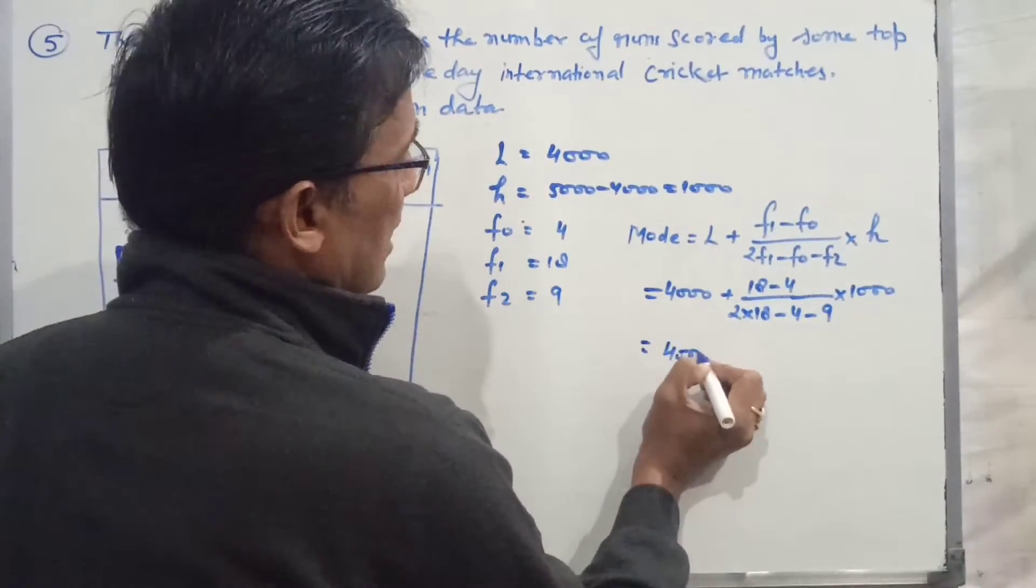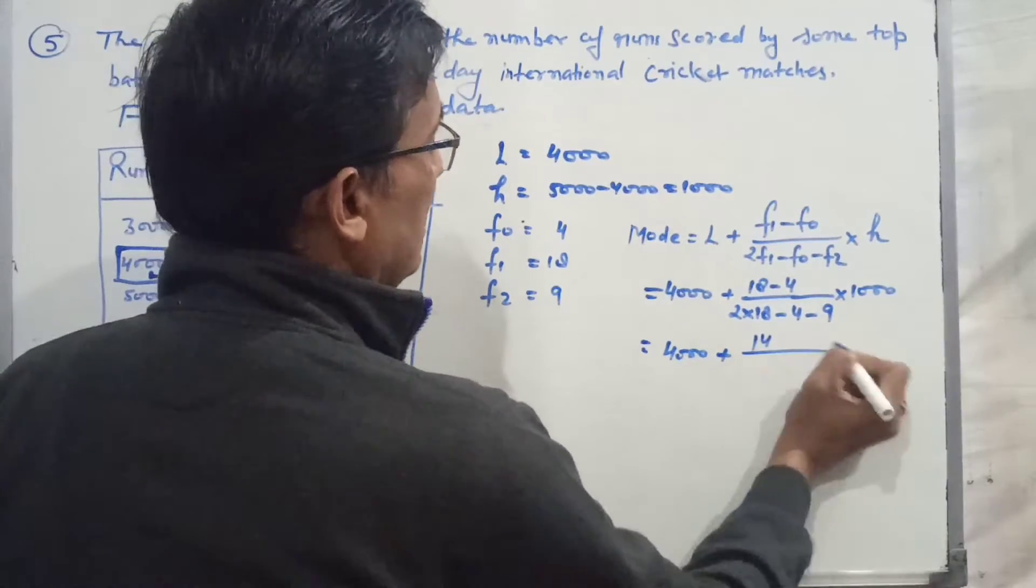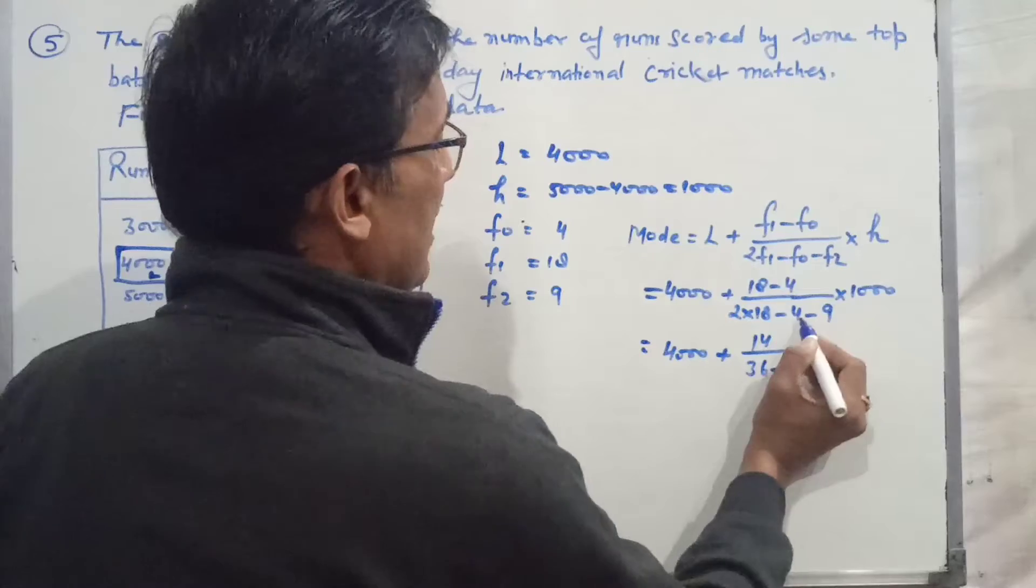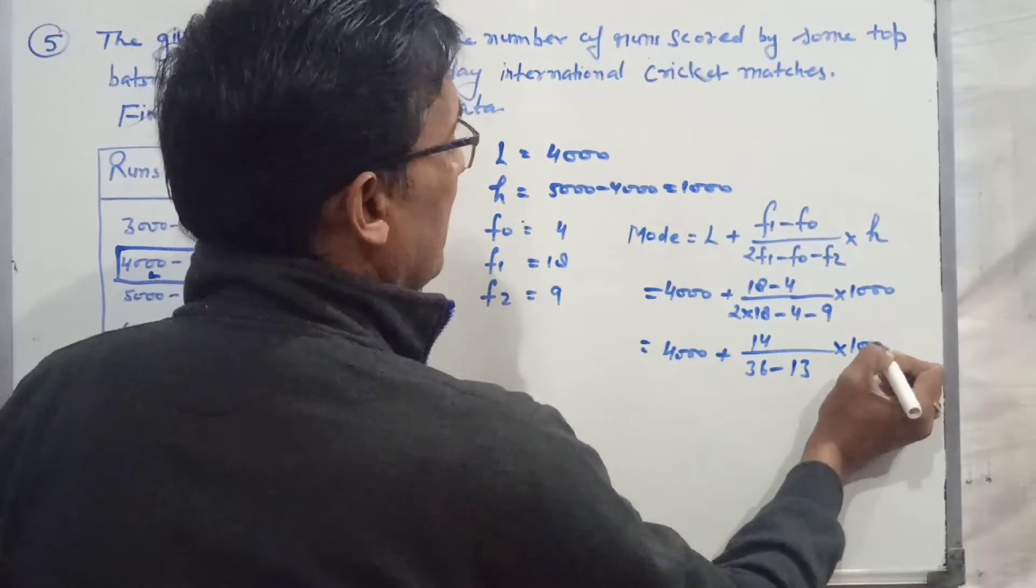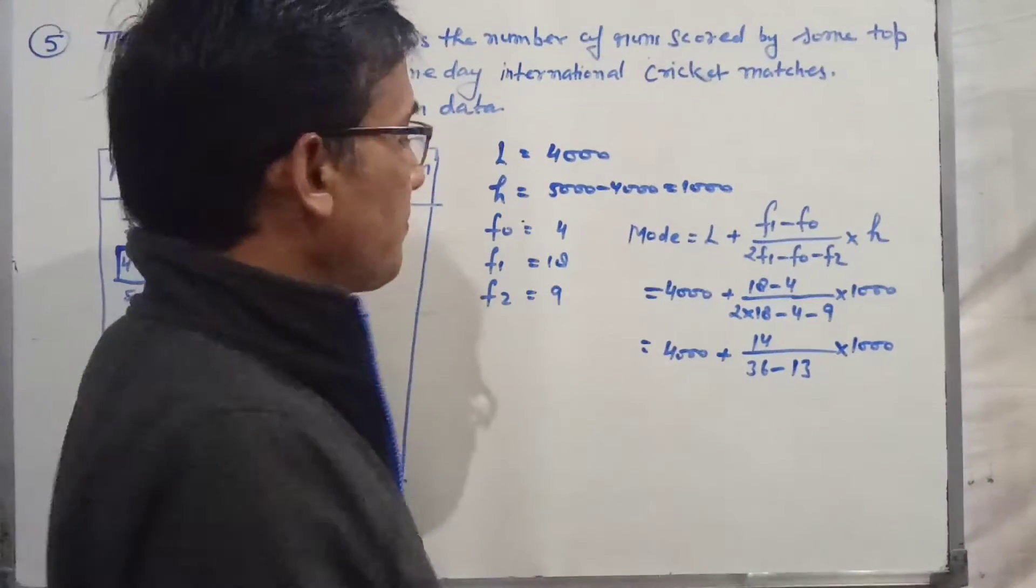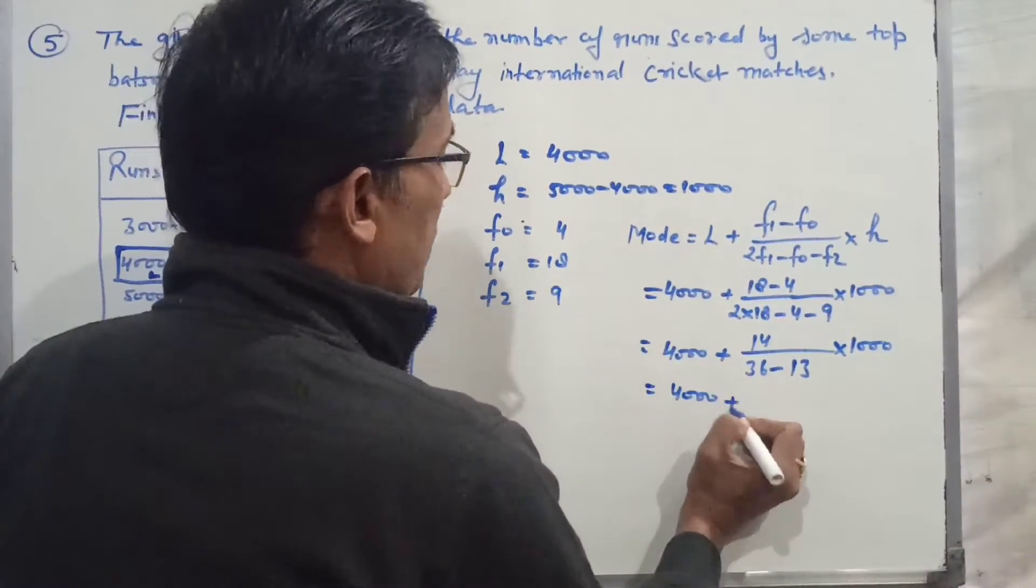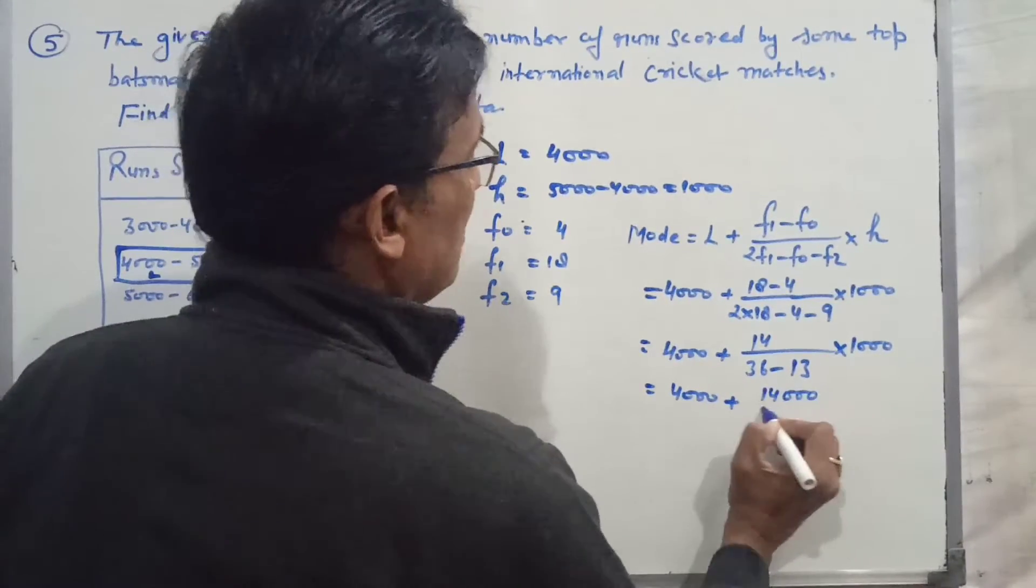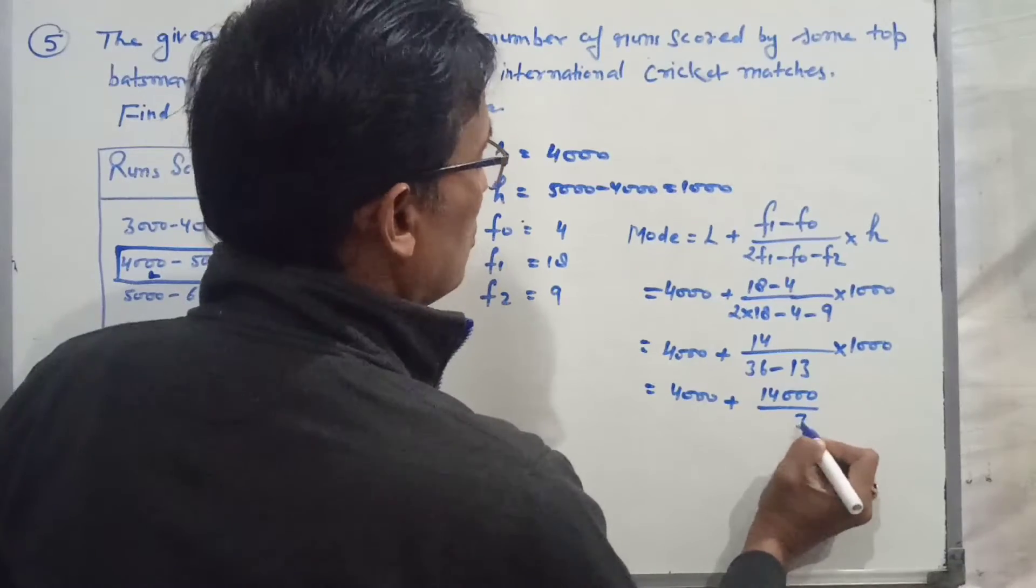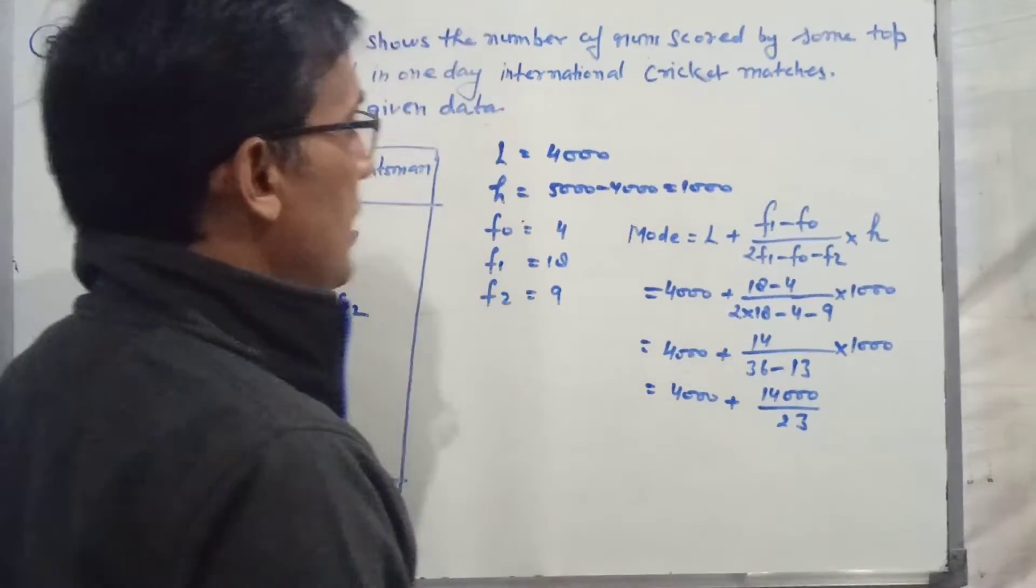So 4,000 plus (18 minus 4) divided by (2 times 18 minus 4 minus 9) times 1,000. That gives 4,000 plus 14 divided by (36 minus 4 minus 9) times 1,000, which is 4,000 plus 14 divided by 23 times 1,000.